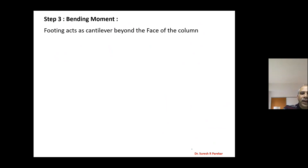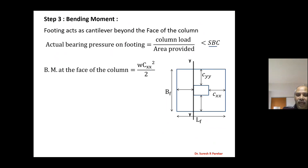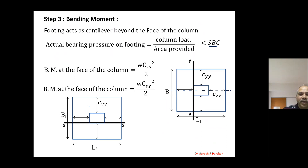Next is bending moment. The footing acts as a cantilever beyond the face of the column, and we consider actual bearing pressure — which is always less than soil bearing capacity — to determine the bending moment. Bending moment about YY axis equals W into CXX squared divided by 2, and bending moment about XX axis equals W into CYY squared divided by 2. Since we know BF and LF, we can calculate bending moments due to actual bearing pressure on the footing.